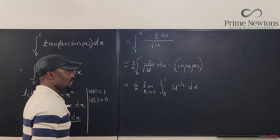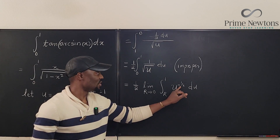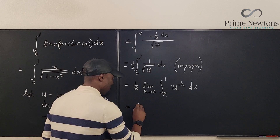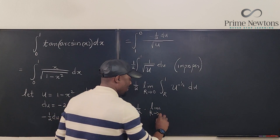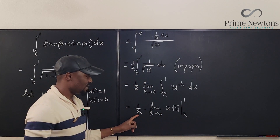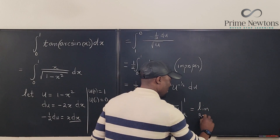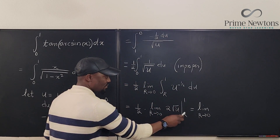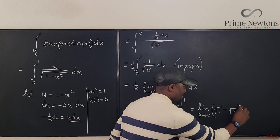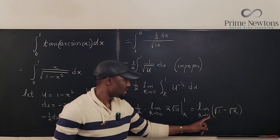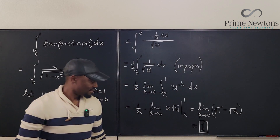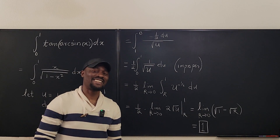I'm going to write 1 over the square root of u as u to the negative one-half du. Integrating this, I add one-half to the exponent and divide by one-half, which gives 2 times the square root of u. So this becomes one-half times the limit as R goes to 0 of 2 times the square root of u evaluated from R to 1. The 2 and one-half cancel, leaving the limit as R goes to 0 of the square root of 1 minus the square root of R. The square root of 1 is 1, and as R goes to 0 that term goes to 0, so our final answer is 1. Never stop learning!